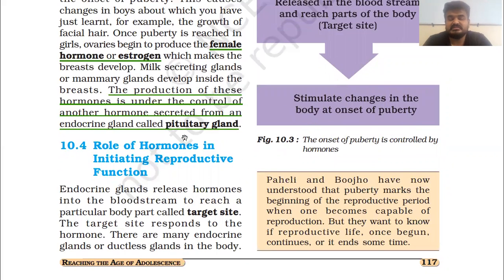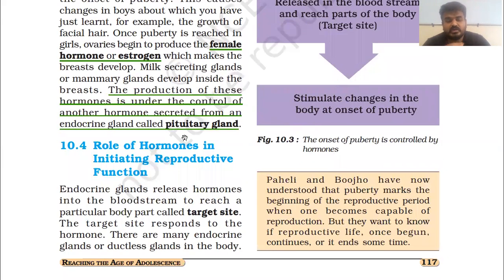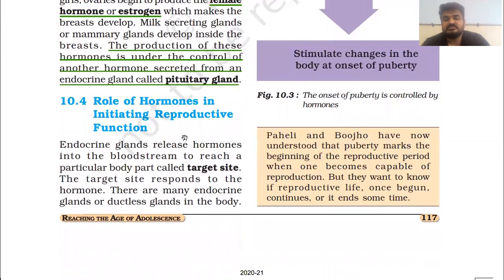Our next upcoming topic is Topic 10.4 — that is the role of hormones in initiating reproductive function. We have seen that a person has reproductive organs, which are different for males and females. We have also seen male gametes and female gametes. Endocrine glands release hormones into the bloodstream to reach a particular body part called the target site.